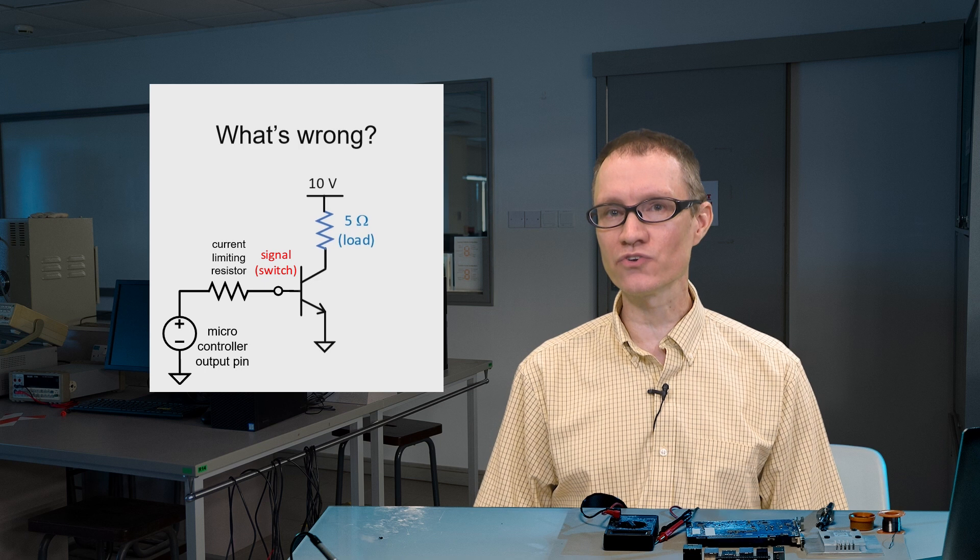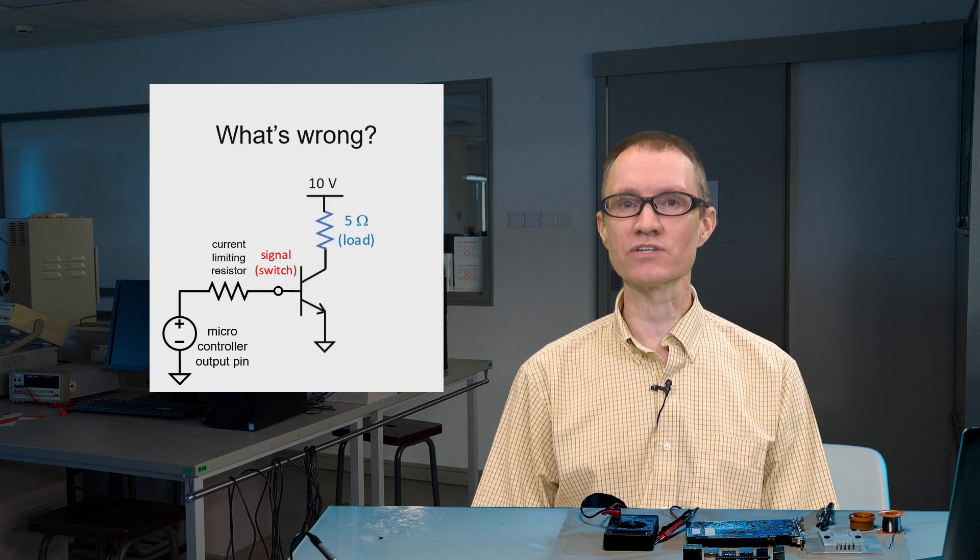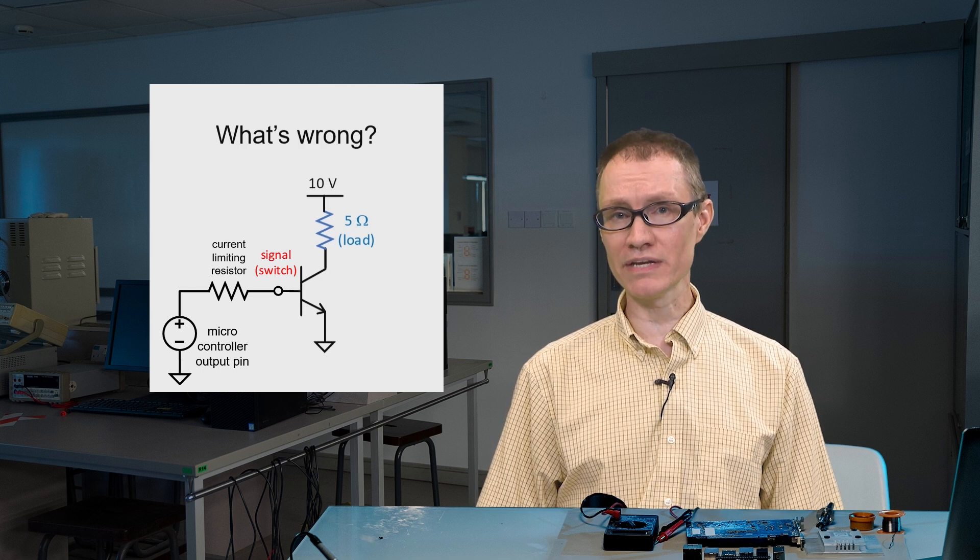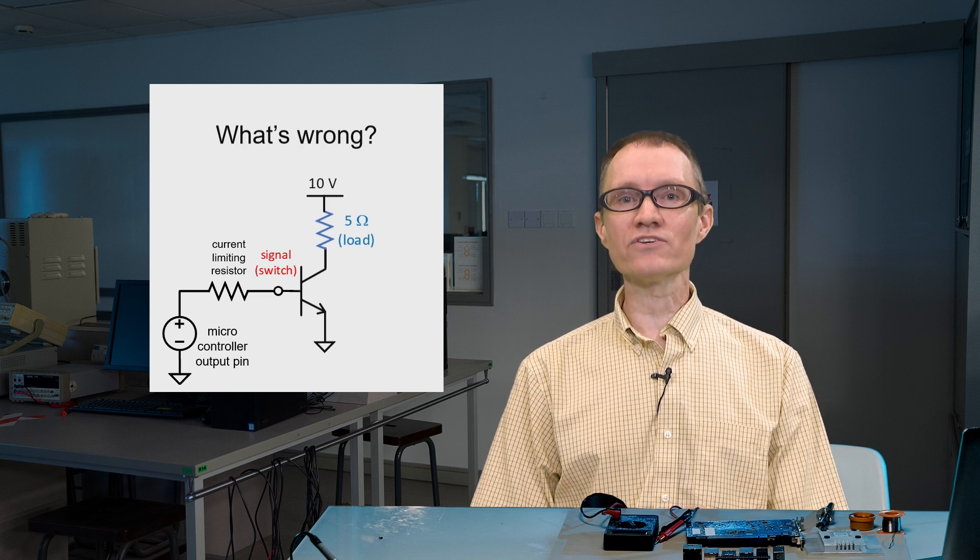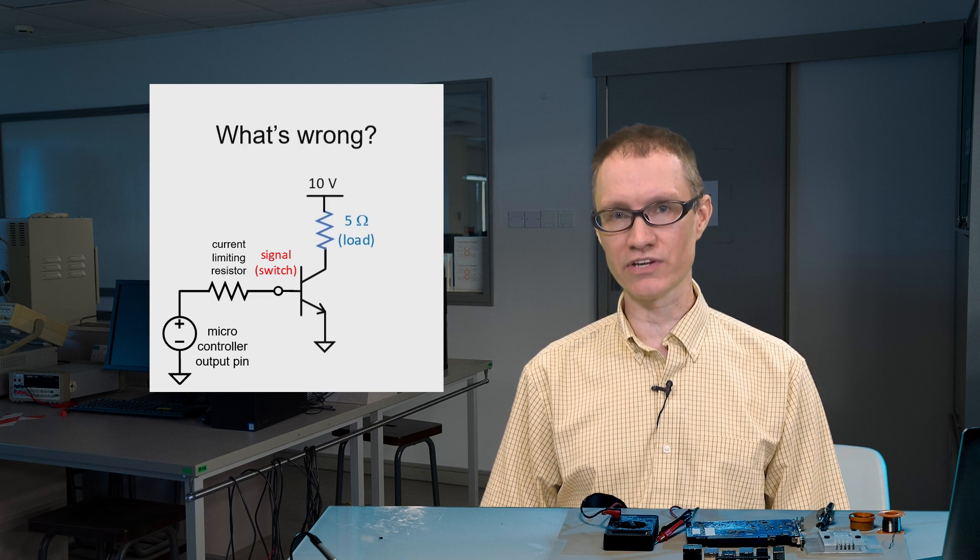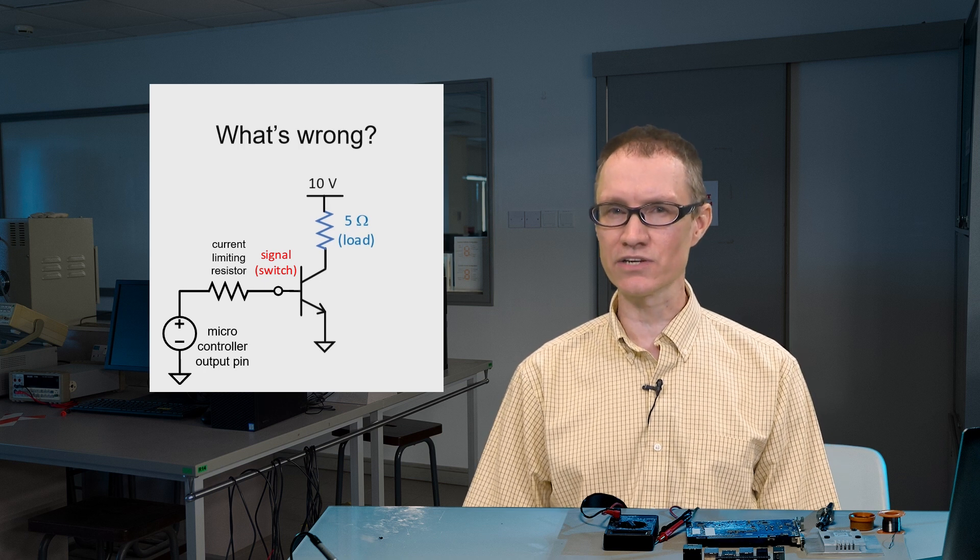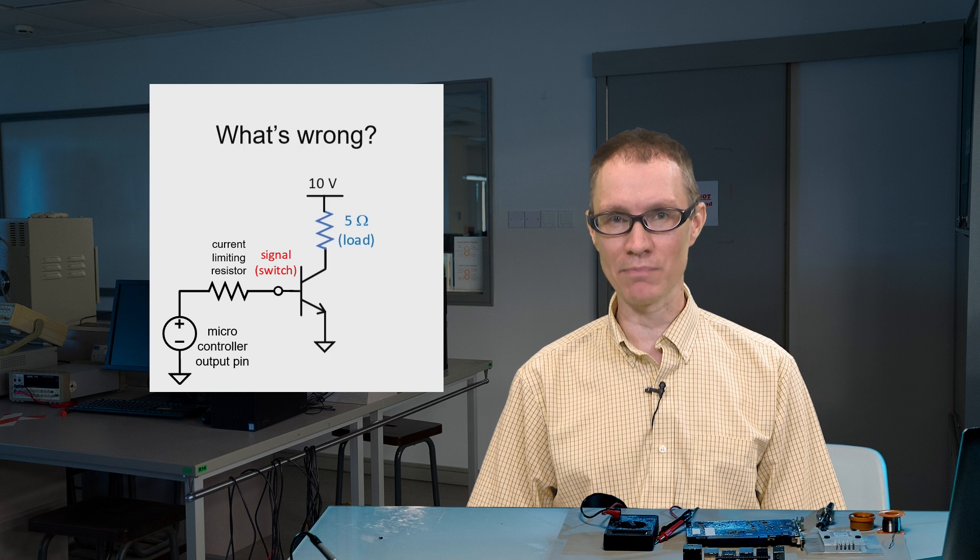Can the microcontroller provide the necessary current or not? That's the potential problem with this circuit. What we'll later see is that the Darlington configuration can help improve the situation, but first let's analyze this circuit in more detail to see the extent of the problem.